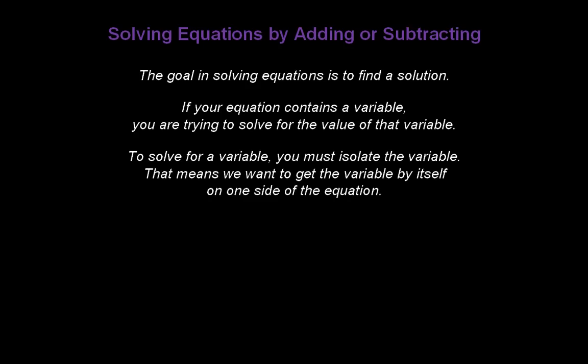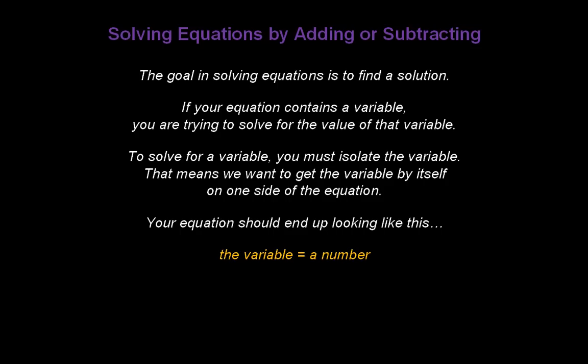To solve for a variable, you must isolate the variable. That means we want to get the variable by itself on one side of the equation. Your equation should end up looking like this: the variable equals a number. For example, p equals 16.